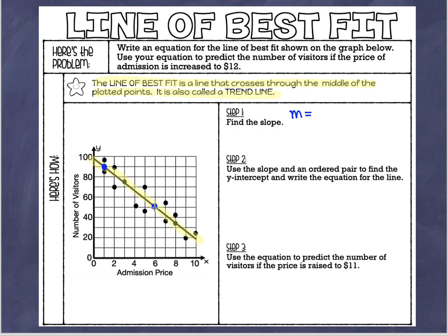Now we want to find the slope. I'll use my slope formula: m equals the change in y over the change in x. The ordered pair for the first point is (6, 50) — right between 40 and 60 on the y-axis gives us 50. My first ordered pair is (6, 50). The second ordered pair is (1, 90) — right between 80 and 100 gives us 90. So (1, 90).